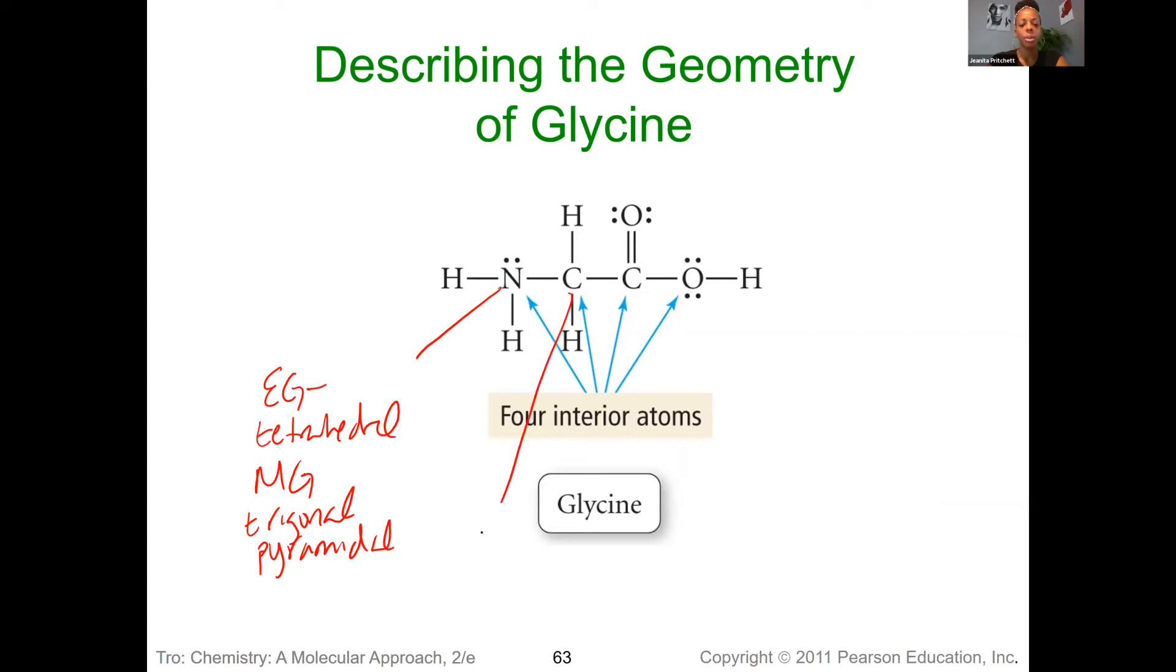For this carbon, our electron geometry and molecular geometry would both be tetrahedral, because there's a total of four electron groups and no lone pairs.